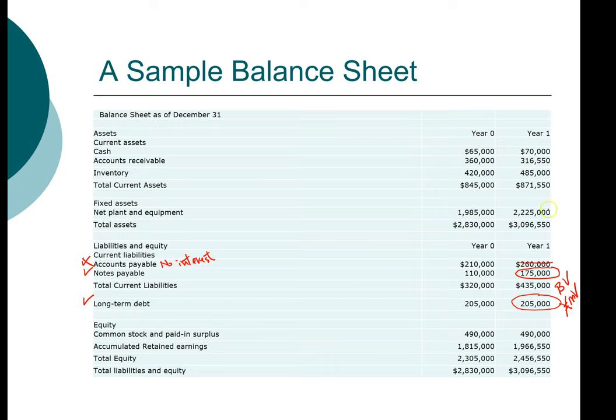The reason we make this simplifying assumption is because the market value of debt oftentimes is not available on an exchange like stock prices are. You can look up the stock price really easily on any stock exchange, but the price of a bond is a lot less accessible. So we'll assume the values are $175,000 and $205,000. The cash amount for year one is $70,000.